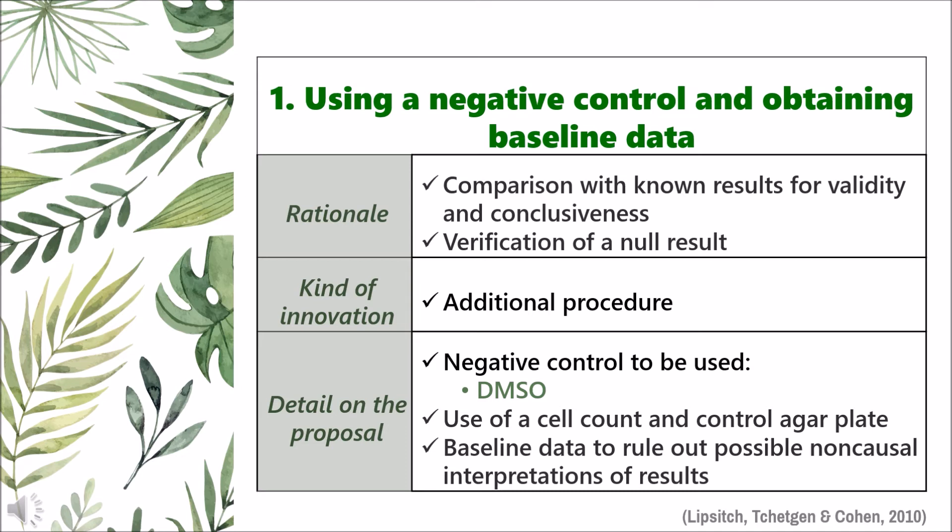It was not explicitly mentioned in the article that a growth control plate was used in the antibacterial agar dilution method — it was only used for the broth microdilution and antifungal assay. The viable count of the bacterial suspension used for preparing the initial inoculum should have been determined. In the reference protocol, it is stated that for the test to be valid, the presence of around 100 to 200 colonies on the control agar plate is expected. By employing such measures, baseline data may be established to better help researchers follow an accurate experimental approach and rule out possible non-causal interpretations of the results.